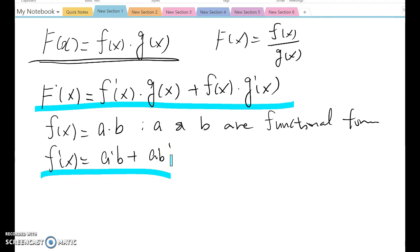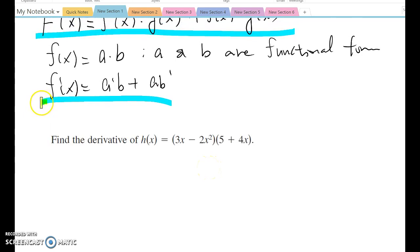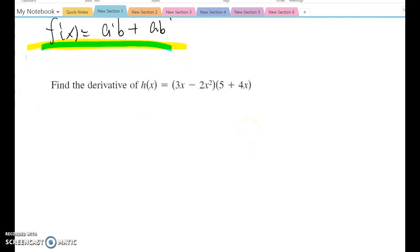Look at an example. Find the derivative of h(x) equals 3x minus 2x squared, times 5 plus 4x. I will use the property and set it up this way. First, I'm going to set up a, so a equals 3x minus 2x squared, and b equals 5 plus 4x. Now just find a prime and b prime separately. Then a prime becomes 3 minus 4x, and b prime is 4.